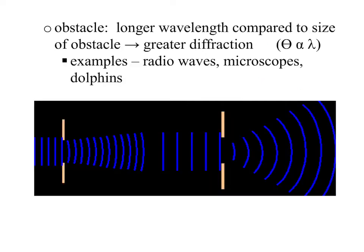Another way to have greater diffraction is if you have a much longer wavelength compared to the size of the obstacle, then you will have greater diffraction. So here we see that the wavelength is only this big and the opening is that big. So it's not much smaller. So you're not going to get much diffraction there, but if you have a much bigger wavelength going through the same size opening, then you're going to have a bigger diffraction.